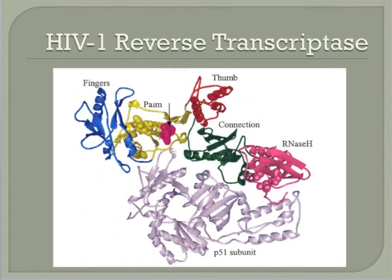Reverse transcriptase is a fascinating protein that uses the original viral RNA as a template to create double-stranded DNA. This DNA will be used by the host to code for new viral RNA and proteins. Initially, the viral RNA serves as a template for the production of the first strand of DNA, which yields a DNA-RNA hybrid molecule. This gets fed through the RNase H domain of the protein to remove the RNA from the hybrid. This DNA, which is now single-stranded, is fed back through the polymerase to generate double-stranded DNA, which will be used by the host cell.